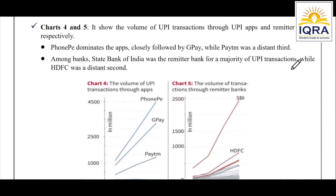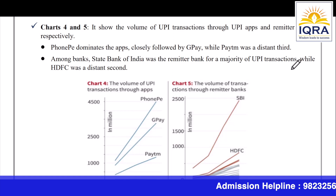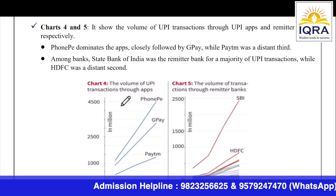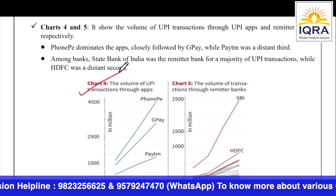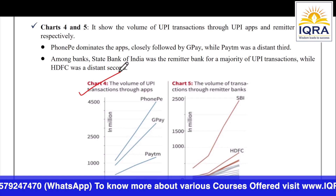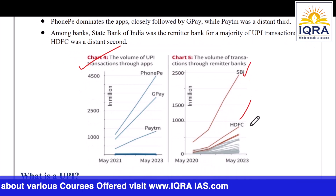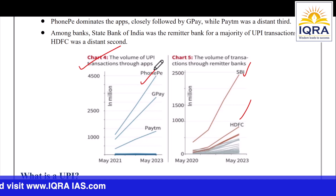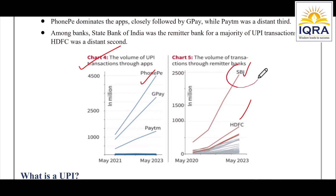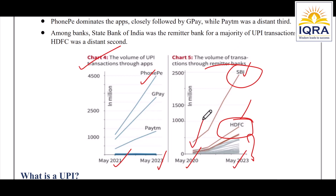The fourth and fifth charts show the volume of UPI transactions through UPI apps and remitter banks respectively. Among UPI apps like PhonePe, Google Pay, and Paytm, PhonePe has dominated with the most transactions, followed by Google Pay and then Paytm. For remitter banks, State Bank of India was the bank used for the majority of UPI transactions, with HDFC second. This increased significantly between 2021 and 2023.